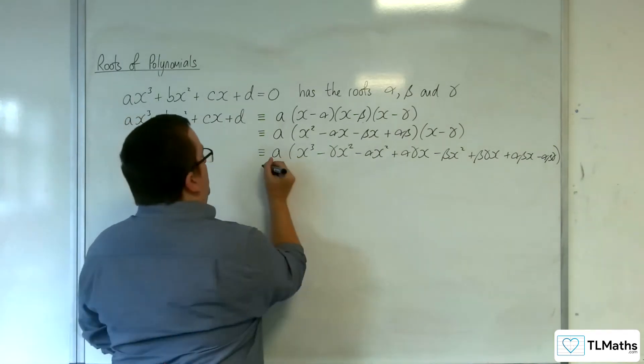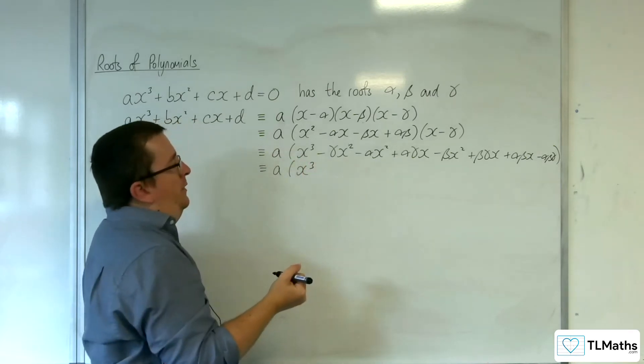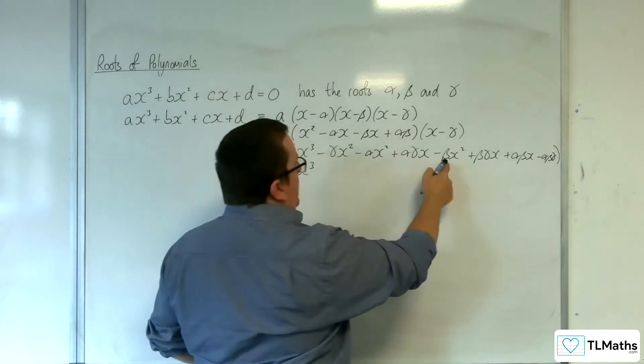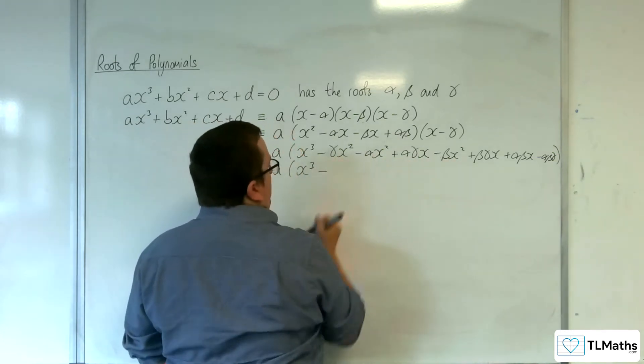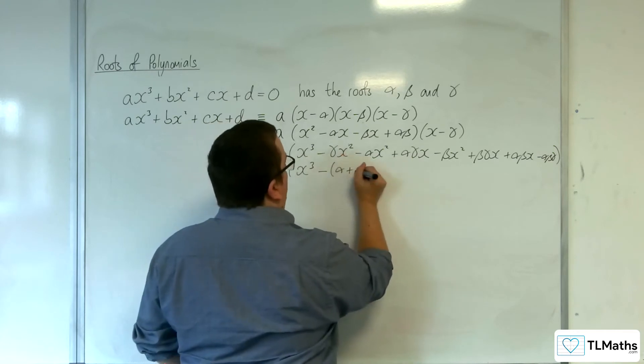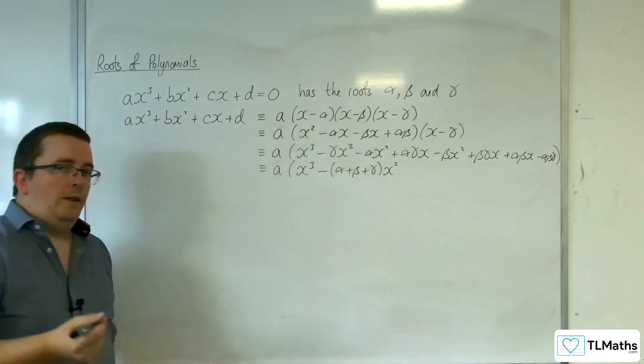Before I multiply through by the a, let's factorize some terms. I've got the x³, then I've got the x² terms. They've all got a minus sign involved. I can factor out the x² as well, and I can have -(α + β + γ)x².